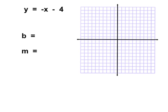Let's take a look at a third example, because this one has a special situation. Our equation is y equals negative x minus 4. Another way of thinking about this is y equals negative 1x minus 4, and sometimes that helps us realize what the slope is going to be. Our b, our y-intercept point, is negative 4, which means our starting point on the y-axis is going to be down at negative 4.